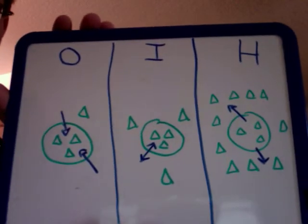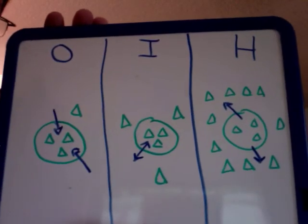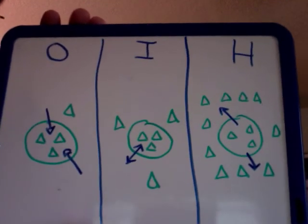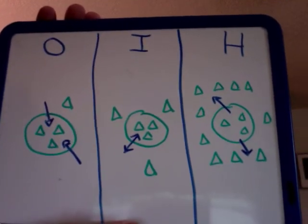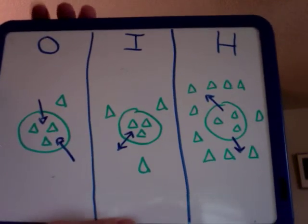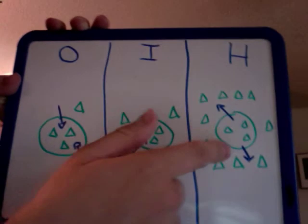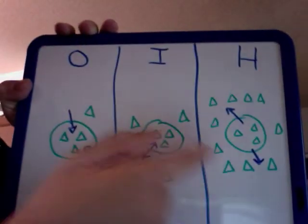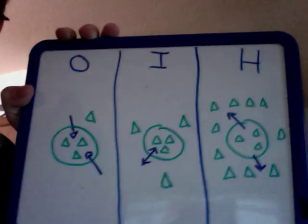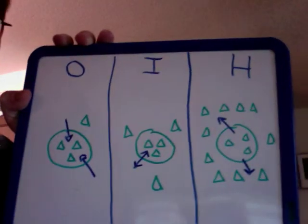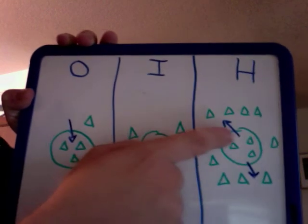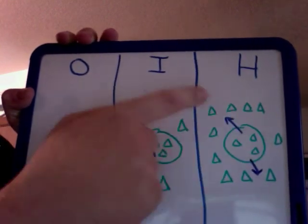Certain types of diuretics that we administer, like mannitol for people who have swelling in the brain from a brain injury, work on this principle. Mannitol is very concentrated — it's hypertonic — and it causes fluid to shift out of the cells.